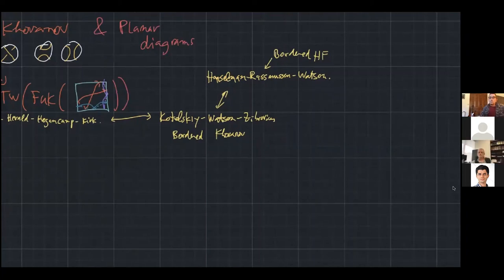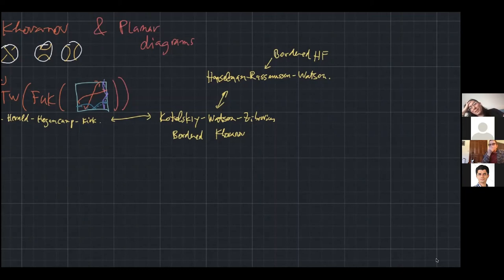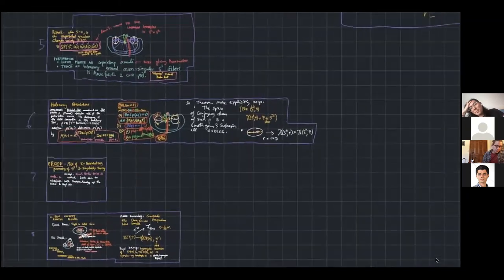Are there questions? I have a question. Hey Ian, what do you expect for, instead of looking at the identity, tangles like a single crossing or maybe more general braids of some sort? Maybe cups or caps?